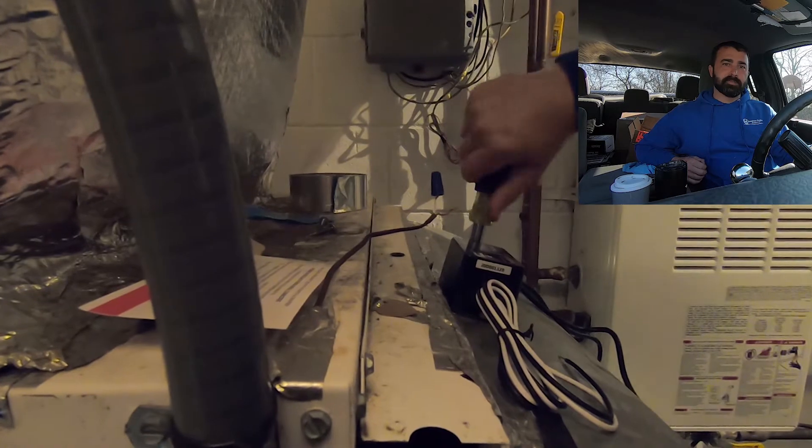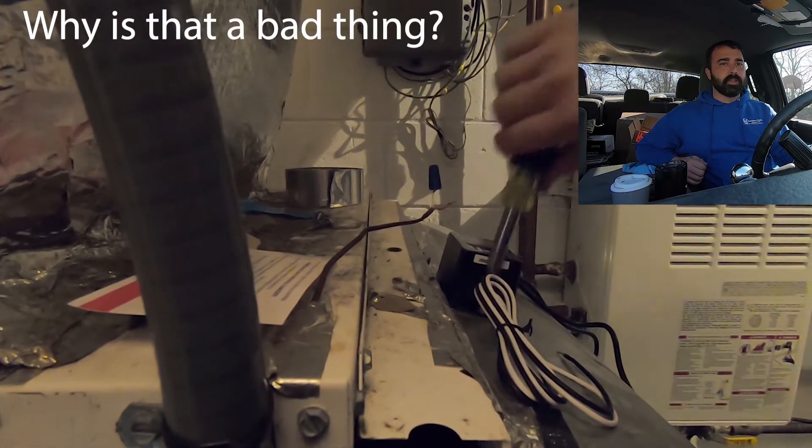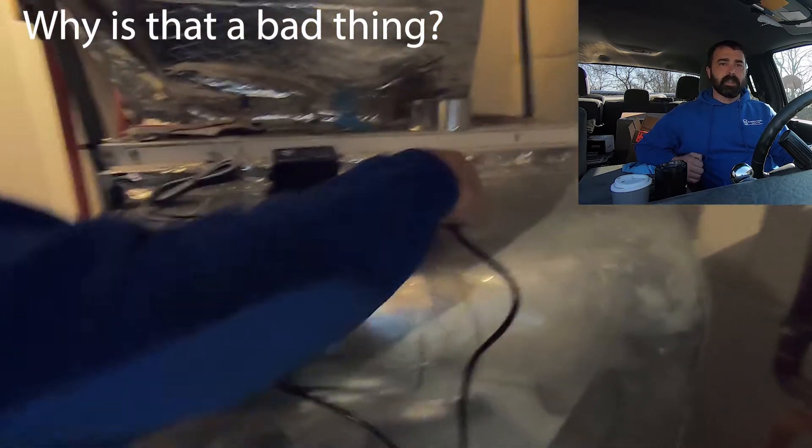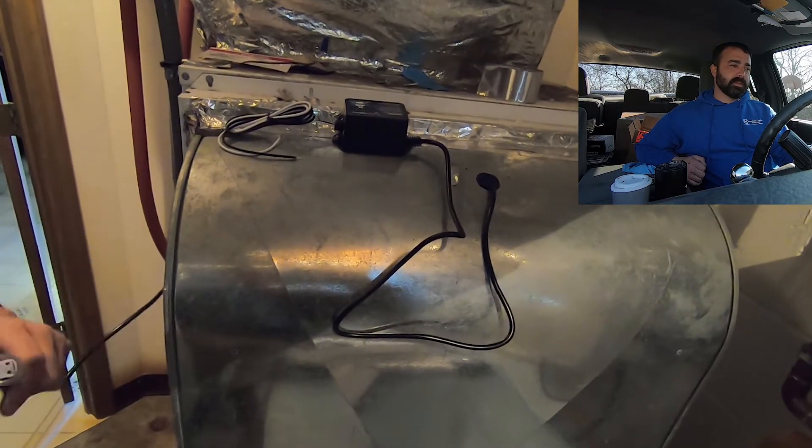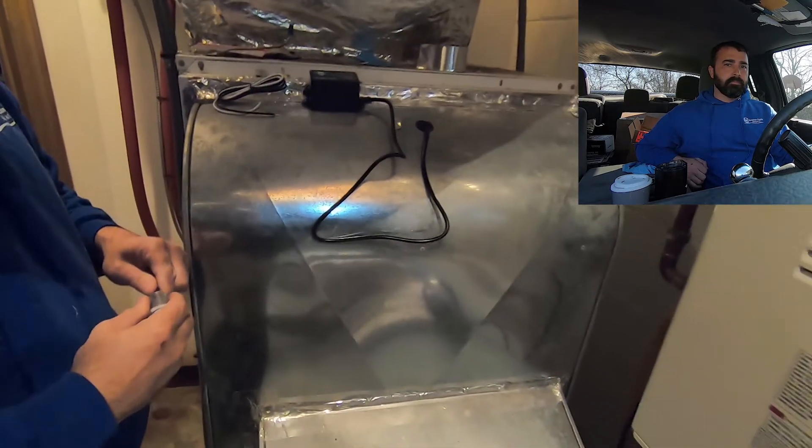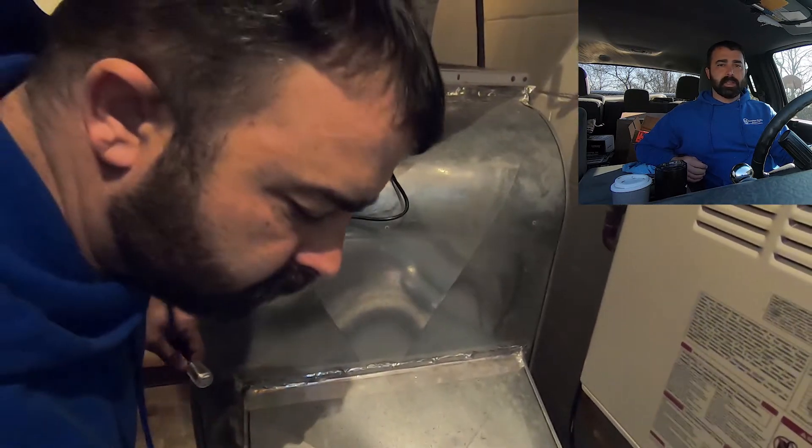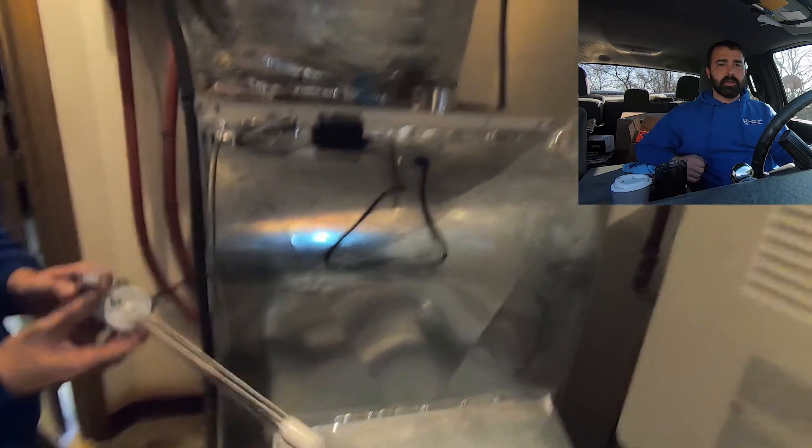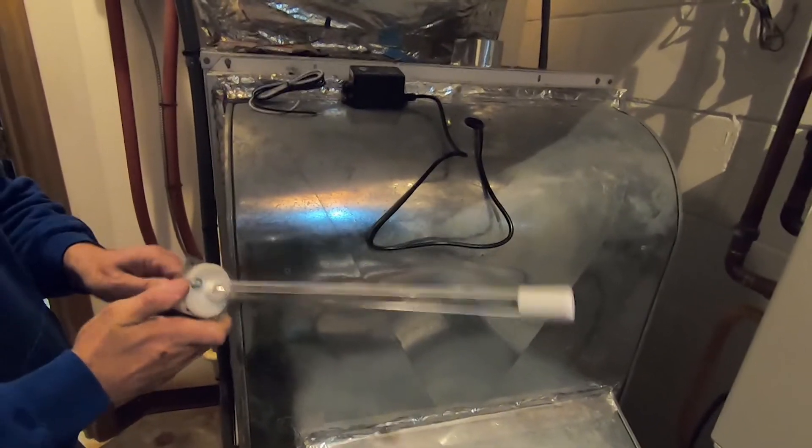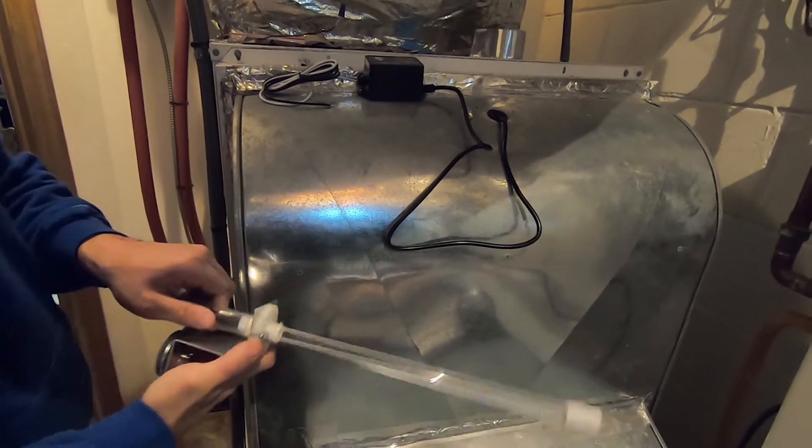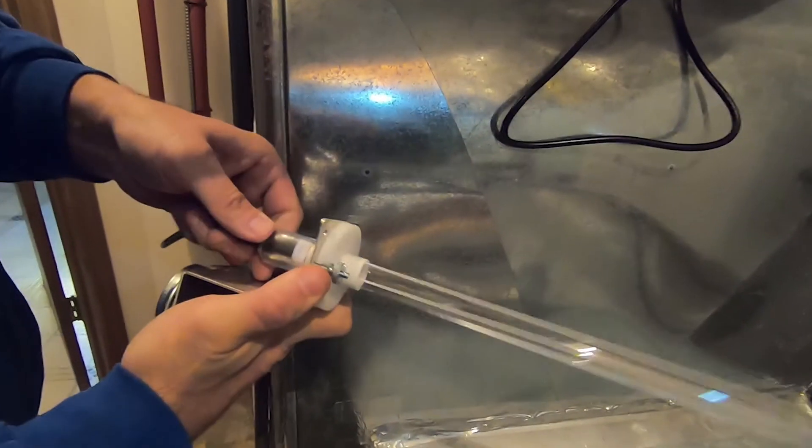It'll also help get smells out of your house. If you ever fried bacon, come back three hours later and you still smell bacon, a UV light depending on the type will definitely help with getting that bacon or fish smell out of your house. It's all about your wants and needs, but they're a good product. Simply plug that in and slide it down over top of it.